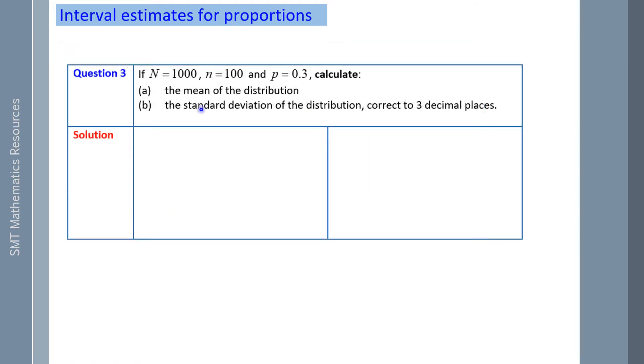In question 3, we have N equaling 1000. Being capital N, that's the population number. The sample is 100, and P is 0.3. The value of P is the percentage of successes in the population, so it's 30%.